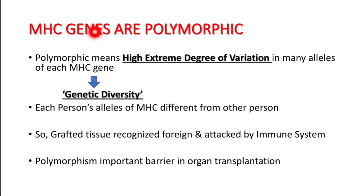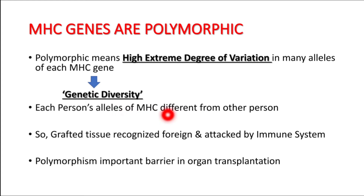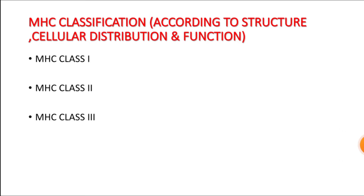You have to remember that MHC molecules are highly polymorphic, meaning there is an extreme degree of variation in each allele of the gene. The alleles of the gene are different in every individual, which is known as genetic diversity. Because of this genetic diversity, each person's MHC molecule is different from another person's. Whenever tissue of one individual is transplanted to another, a reaction will happen because of different MHC molecules — this is the basis behind transplant rejection. The graft tissue is recognized as foreign and attacked by the immune system, and MHC molecules could never be exactly similar, making this a major barrier in organ transplantation.